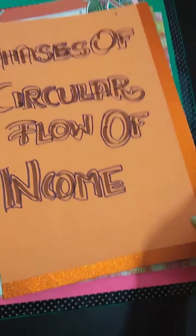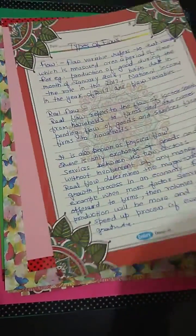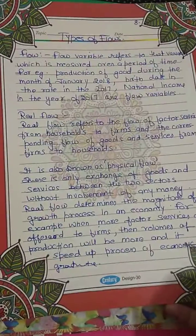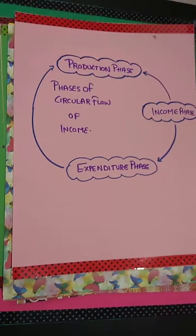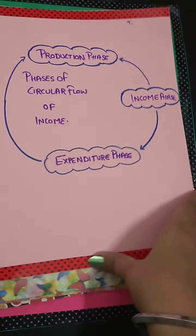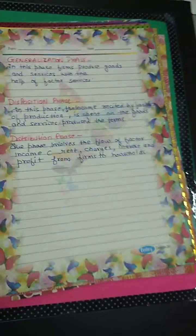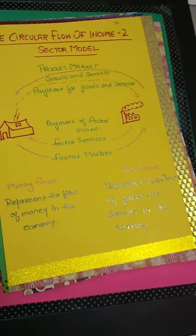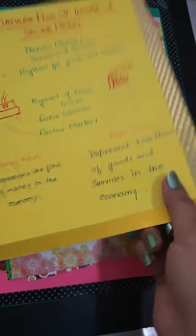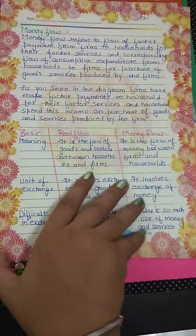Next are the faces of circular flow of income and types of flow. There is no need to copy because you have your own teachers about the matter. Then there is the production phase, the generalization phase with details, the circular flow of income two-sector model, and money flow.